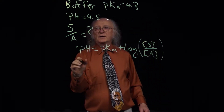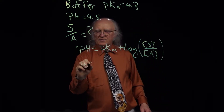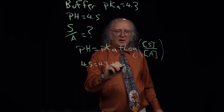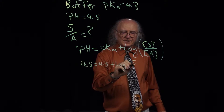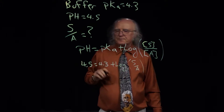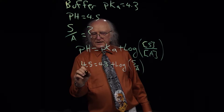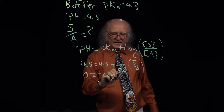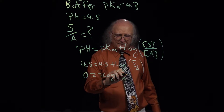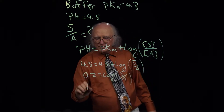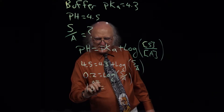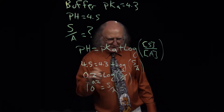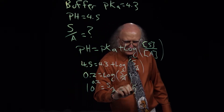We know that 4.5 is equal to 4.3 plus the log of S over A. Taking the 4.3 to the other side, we get 0.2 equals the log of S over A. Therefore, 10 to the 0.2 is equal to S over A, which turns out to be a ratio of 1.58.